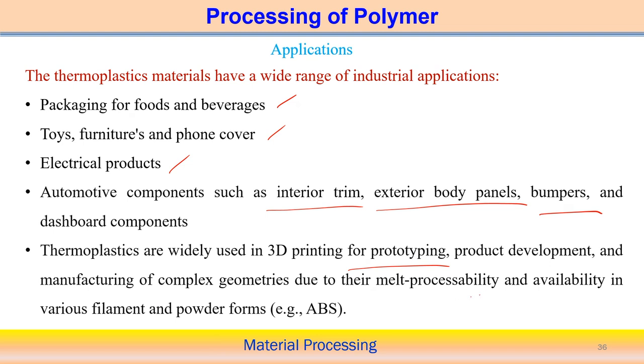Thermoplastics are also widely used in 3D printing and prototyping, due to their melt processability and the availability of various filament and powder forms. For example, ABS is one of the most widely used materials in 3D printed components because ABS filament wire and powder are easily available, making it useful for developing prototypes.